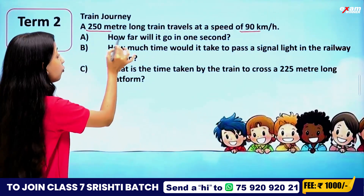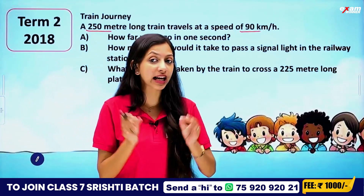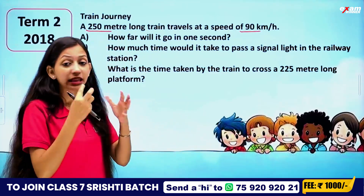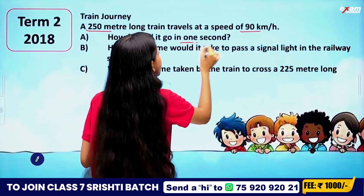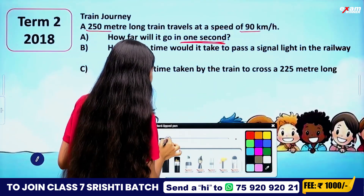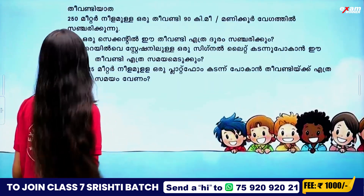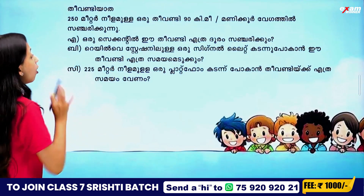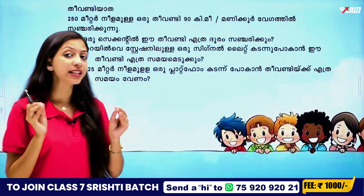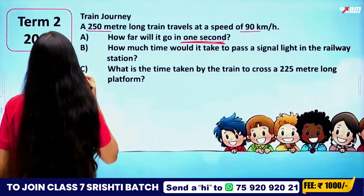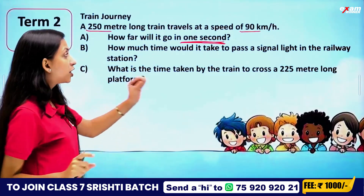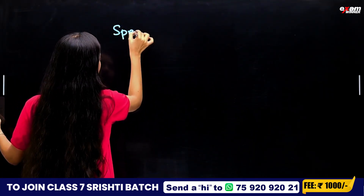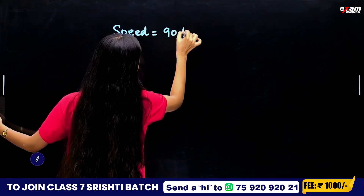How far will the train go in one second? A train travels at a speed of 90 km per hour. In one second, how far will it go? The speed is 90 km per hour.